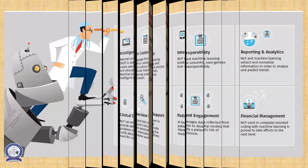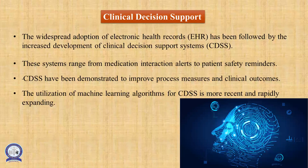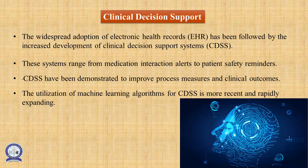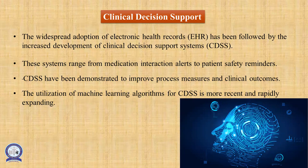This is also related to the predictive model. There is clinical decision support. The widespread adoption of electronic health records has been followed by increased development of clinical decision support systems. These systems range from medication interaction alerts to patient safety reminders. Clinical decision support systems have been demonstrated to improve process measures and clinical outcomes. The utilization of machine learning algorithms for clinical decision support is more recent and rapidly expanding.